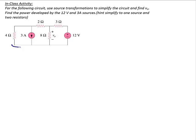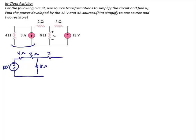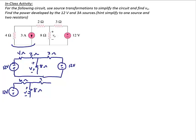On the left side of the circuit, I have a 4-ohm resistor in parallel with a 3-amp current source. I'm going to do a source transformation on these two. When I perform this source transformation, I'll have a 12-volt source with a positive on the bottom — because the arrowhead points down — in series with a 4-ohm resistor, which is in series with a 2-ohm resistor. Simplifying the 4-ohm and 2-ohm resistors gives me 6 ohms. So I have 12 volts in series with 6 ohms, and I still have my 8-ohm resistor, V0, the 3-ohm resistor, and a 12-volt source.